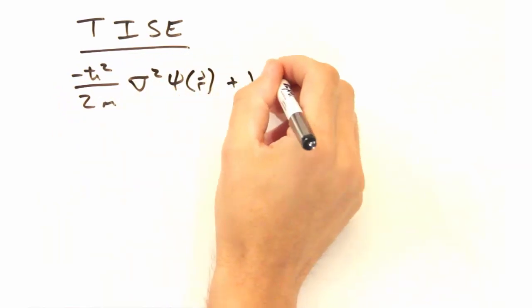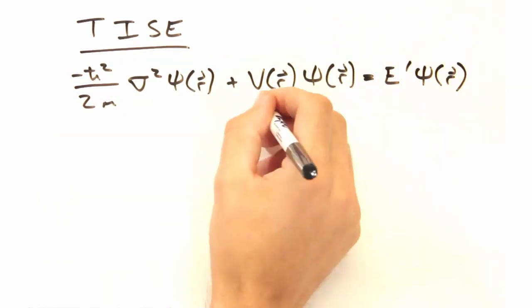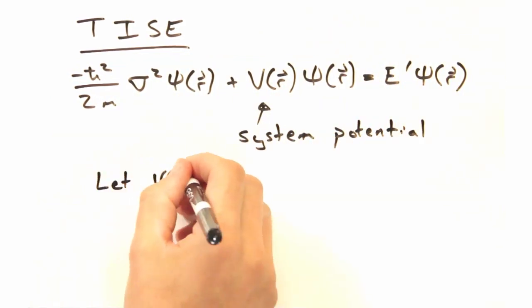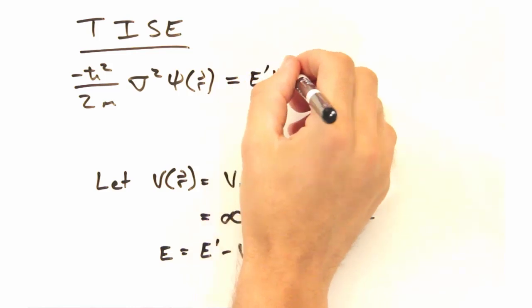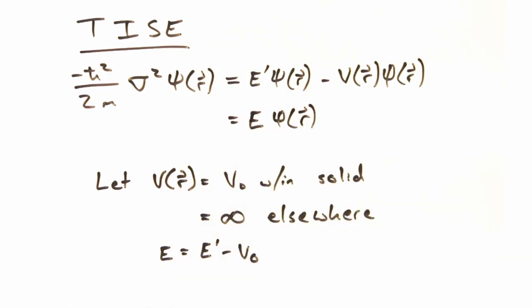Well, in any sort of quantum problem, we always start with the time-independent Schrödinger equation as given here, including the system potential. And to make things easier, I'm going to wrap up the potential into our system energy with this new variable e.